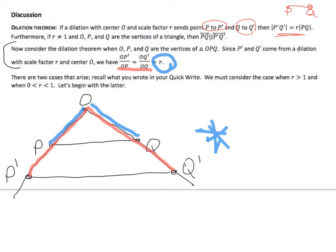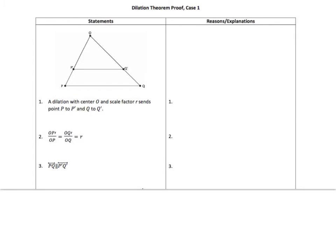So there are two cases that arise. Recall what you wrote in your quick write. You must consider the case when R is greater than one, which is what we did here, and when R is between zero and one, which we would just have P double prime, Q double prime. But the same rules hold true. We have a proof, but don't worry. I'm doing the proof. And we are going to just glaze over the second proof.